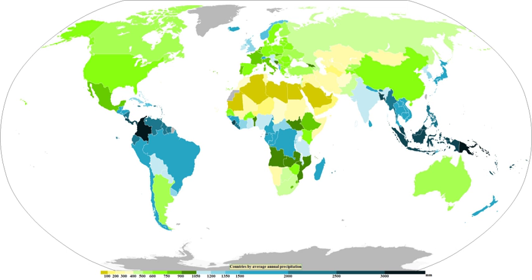On the large scale, the highest precipitation amounts outside topography fall in the tropics, closely tied to the intertropical convergence zone, itself the ascending branch of the Hadley Cell. Mountainous locales near the equator in Colombia are amongst the wettest places on Earth. North and south of this are regions of descending air that form subtropical ridges where precipitation is low; the land surface underneath these ridges is usually arid, and these regions make up most of the Earth's deserts. An exception is Hawaii, where upslope flow due to the trade winds leads to one of the wettest locations on Earth.